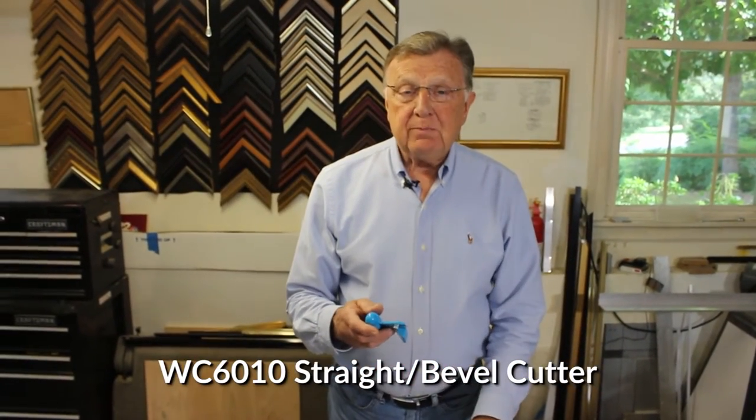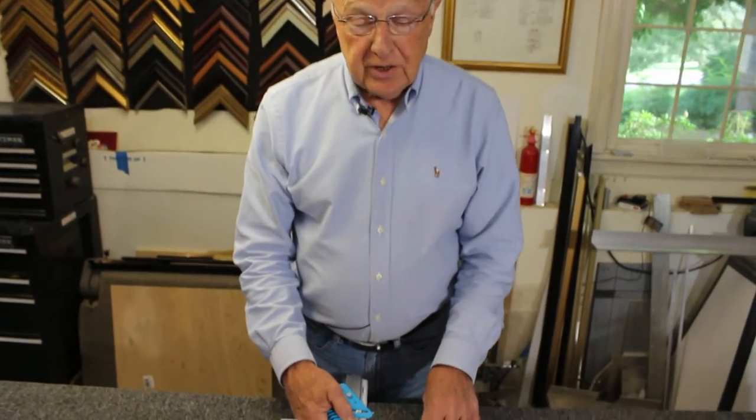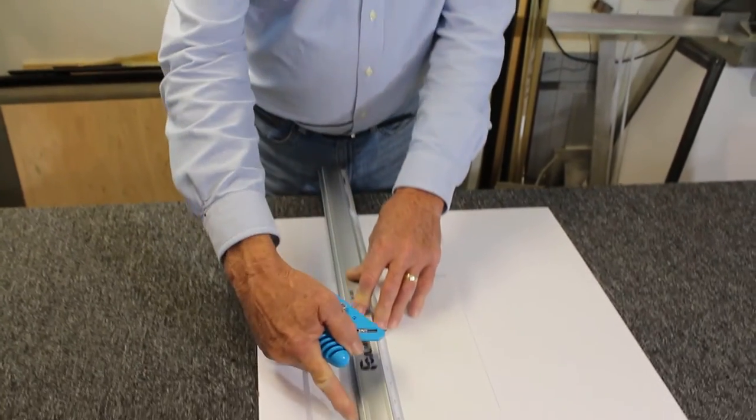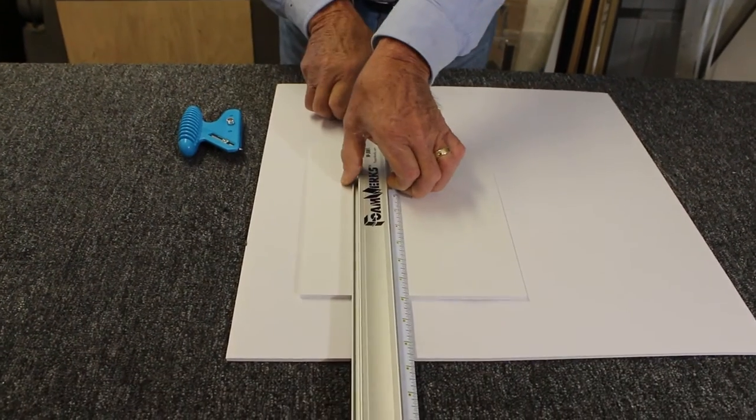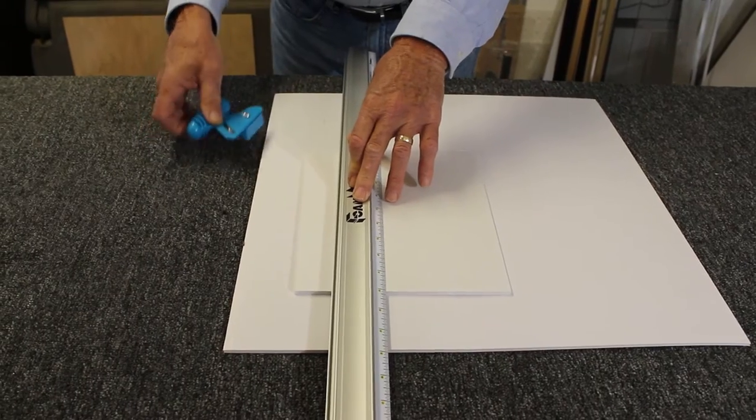This is the Foamworks Straight Bevel Cutter. We're going to use the channel rail to guide us through the cut. I would put a pencil mark here and here according to where I want to cut it and then set the rail right there.